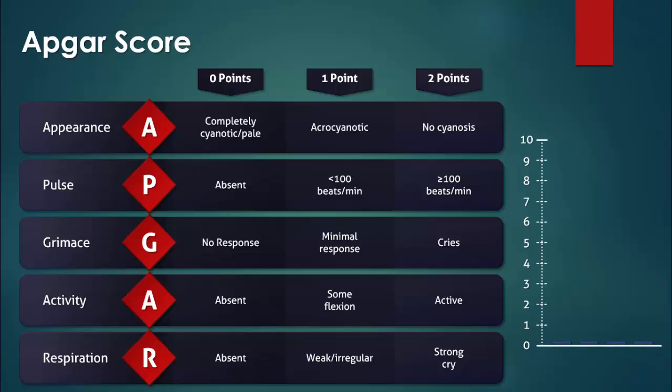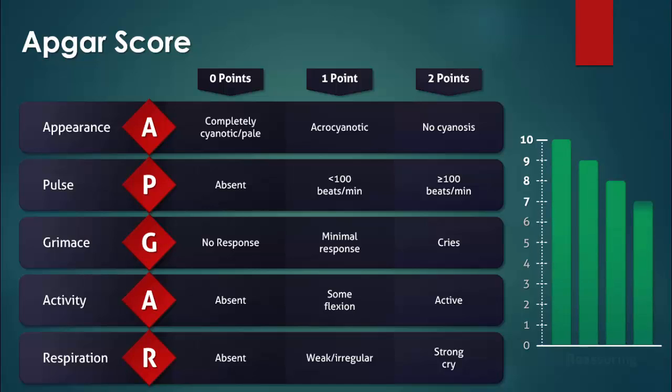After having assessed each parameter, add together the total number of points given. A total score between 7 and 10 points is considered normal. Few babies receive a score of 10 because of the high prevalence of peripheral cyanosis due to a condition called transient tachypnea of the newborn. These babies require only routine post-delivery care.